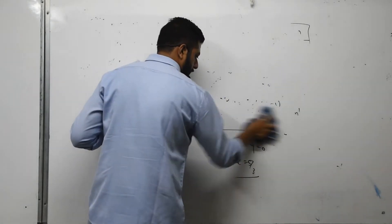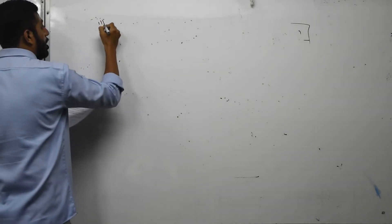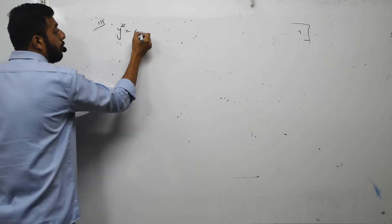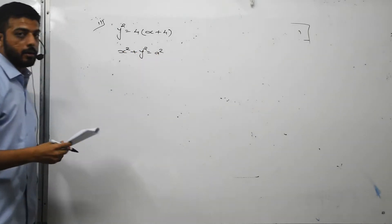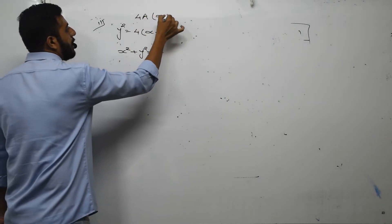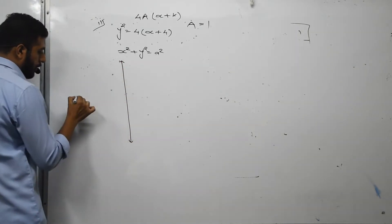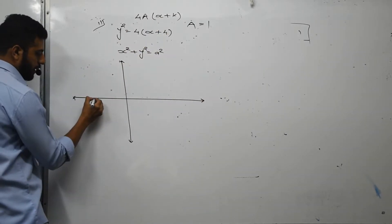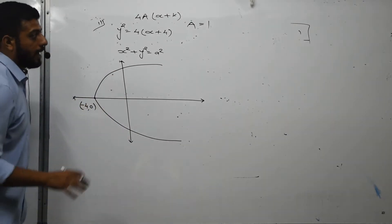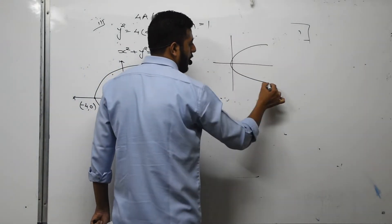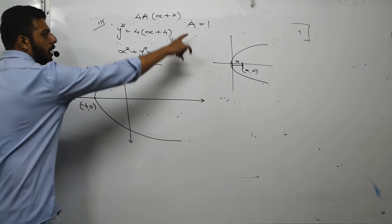Question number 11. You are given the parabola y squared equals 4x plus 4 and the circle x squared plus y squared equals A squared. Comparing with the standard form 4a(x plus k), we get small a equals 1. The vertex of the parabola is at (minus 4, 0). Since small a equals 1, the focus is at (minus 3, 0).